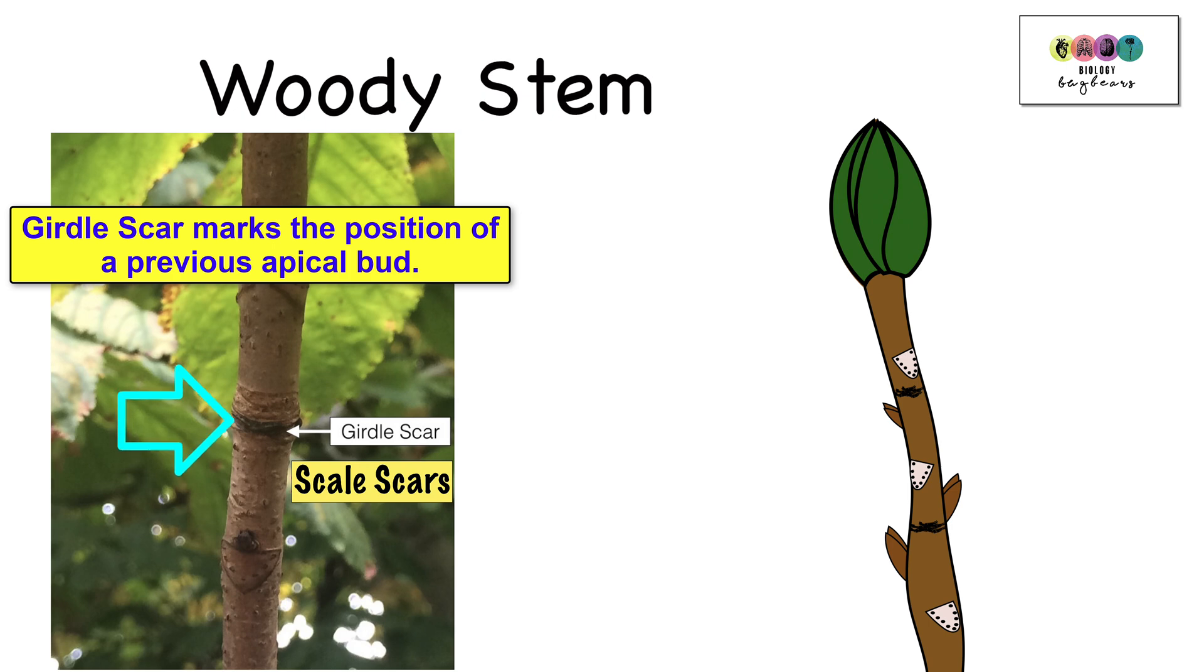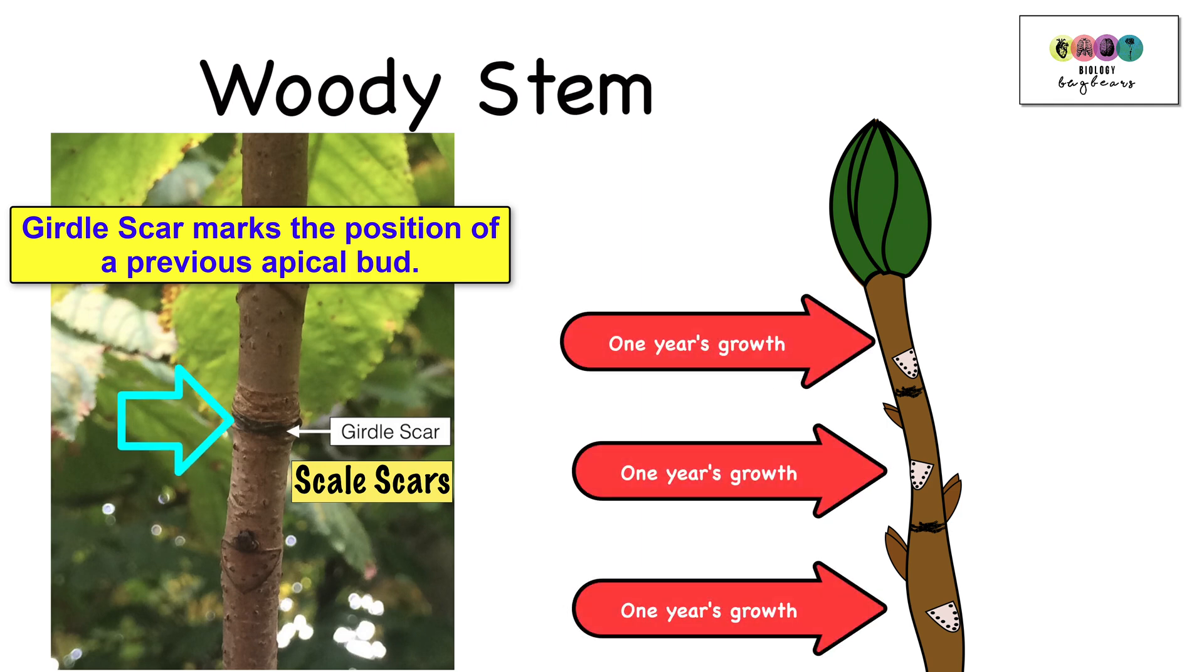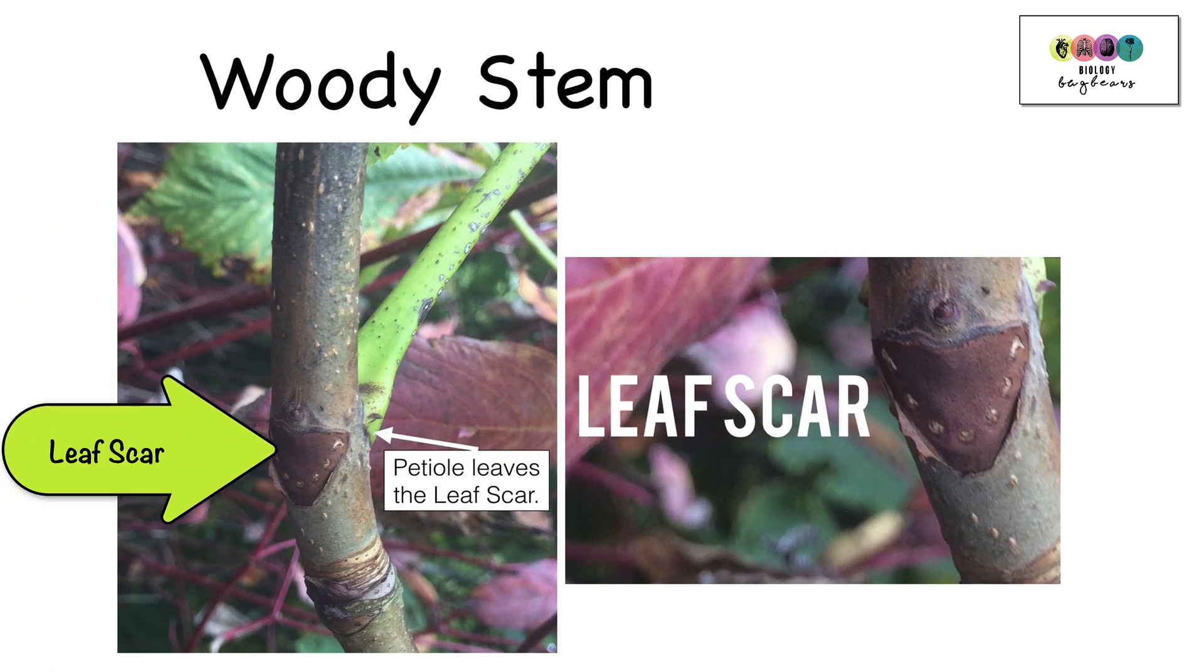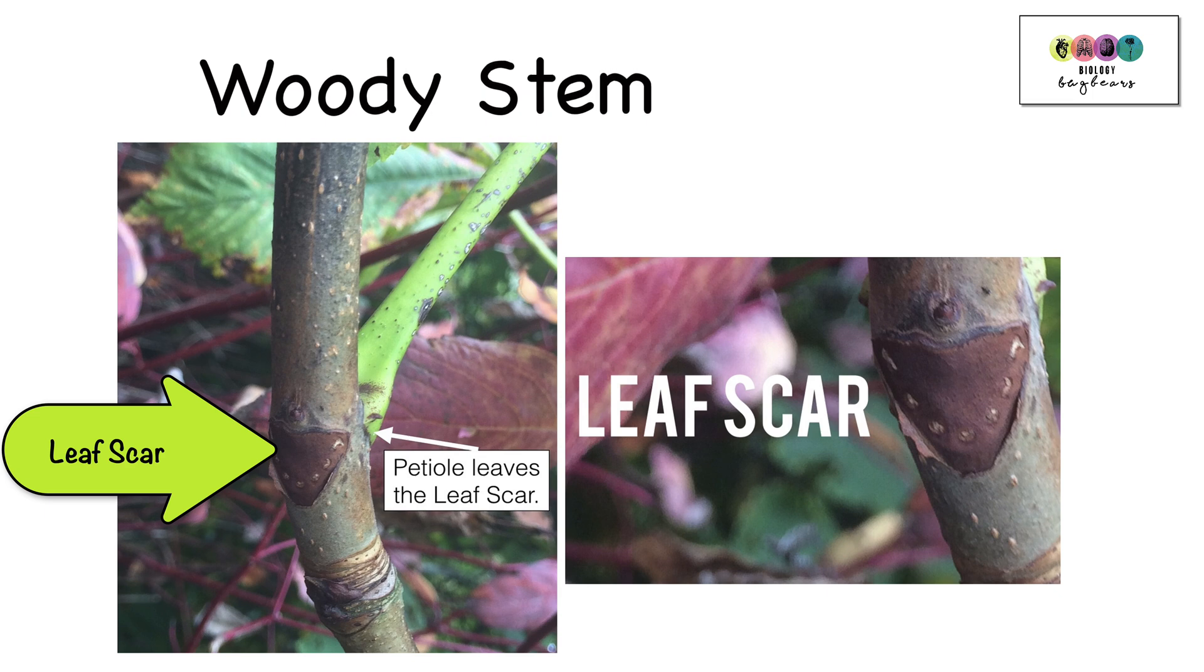All of the scale scars together form the girdle scar. So when you look at the woody stem and you see a girdle scar, you're going to see where there once was a terminal or apical bud, and the space between each one of those girdle scars marks one year's growth. Another scar which you'll see on the woody stem is the leaf scar. This is where a petiole once was attaching a leaf, and it has fallen off, and the remaining scar is the leaf scar.